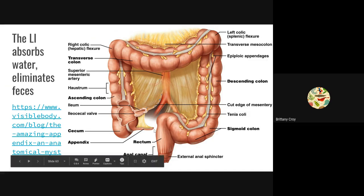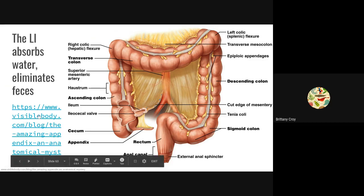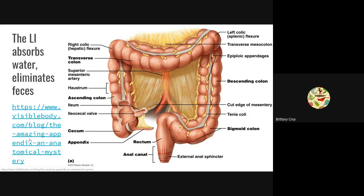The appendix is found near the ascending colon. It has a little bit of lymphatic tissue inside it, which gives an argument for why the appendix is not actually vestigial — because it has that lymphatic function.